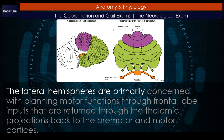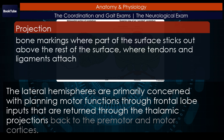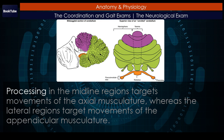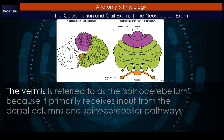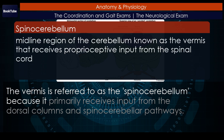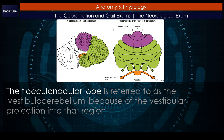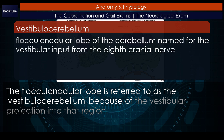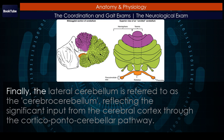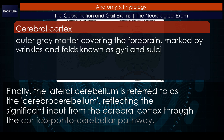The lateral hemispheres are primarily concerned with planning motor functions through frontal lobe inputs that are returned through the thalamic projections back to the premotor and motor cortices. Processing in the midline regions targets movements of the axial musculature, whereas the lateral regions target movements of the appendicular musculature. The vermis is referred to as the spinocerebellum because it primarily receives input from the dorsal columns and spinocerebellar pathways. The flocculonodular lobe is referred to as the vestibulocerebellum because of the vestibular projection into that region. The lateral cerebellum is referred to as the cerebrocerebellum, reflecting the significant input from the cerebral cortex through the corticopontocerebellar pathway.